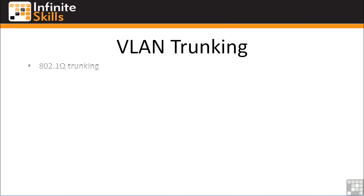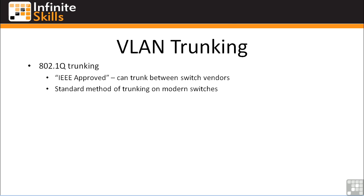Now let's talk about 802.1Q trunking. 802.1Q is IEEE approved, meaning that if you have a Cisco switch and a Juniper switch and you want to set up a trunk between them, you could set up an 802.1Q trunk and both switches would understand it. 802.1Q trunking is the standard method of trunking on modern switches. Most Cisco switches only do 802.1Q trunking — you can specify that configuration item, but for the most part there's nothing else to choose from.